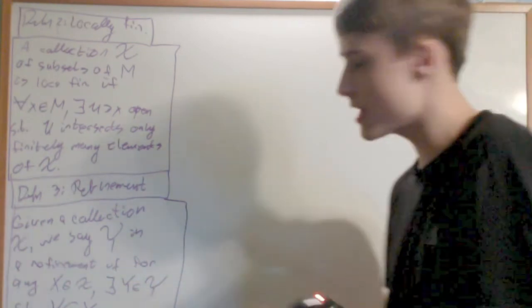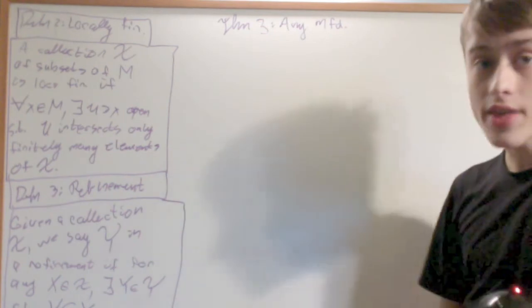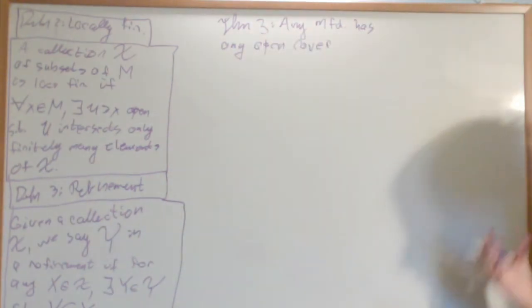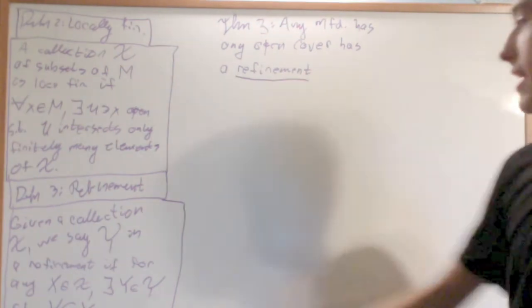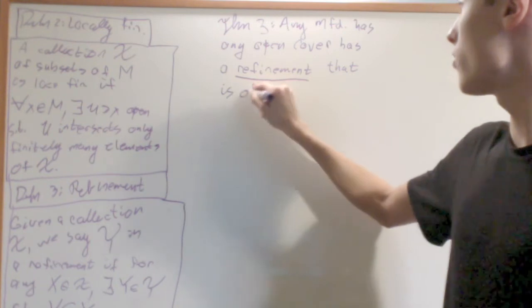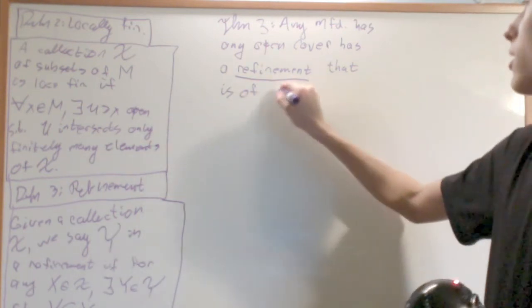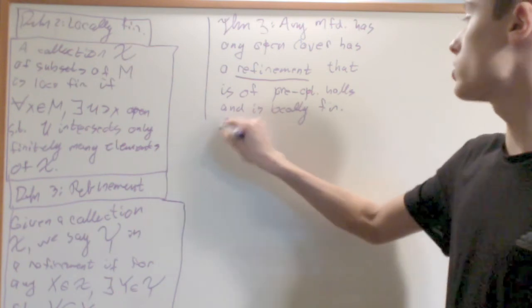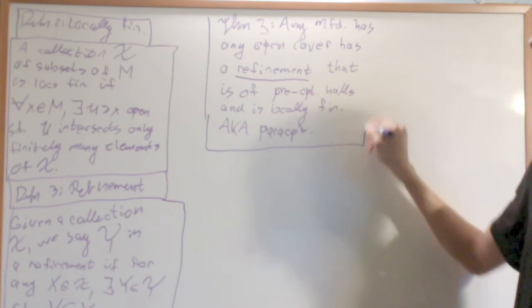And the theorem is, is that any manifold has it that any open cover, collection of open sets that covers M, has a refinement, making it smaller like this, that is of the precompact balls that we discussed before, and locally finite. And this is also known as paracompactness. So any manifold is paracompact.